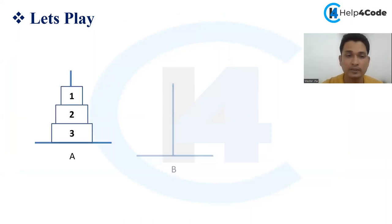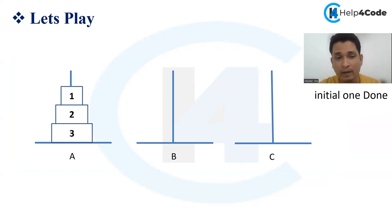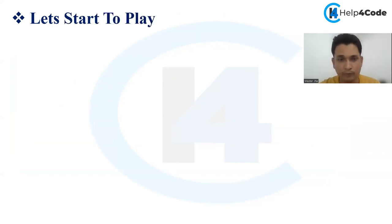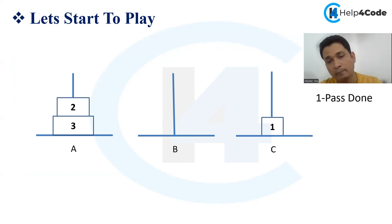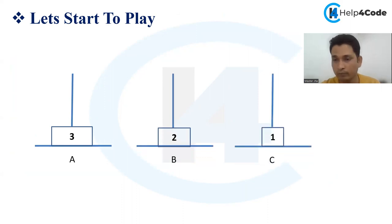Now let's start the game. In the initial step we have three plates and three pipes: A, B, and C. In the next step, I will move plate one from pipe A to pipe C. Done — we have just moved plate one from pipe A to pipe C. In the next pass, we will move plate two from pipe A to pipe B, because we can take only one plate and we have to pick from the top side.